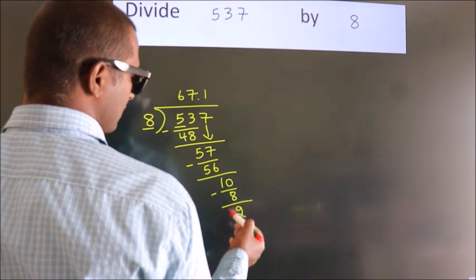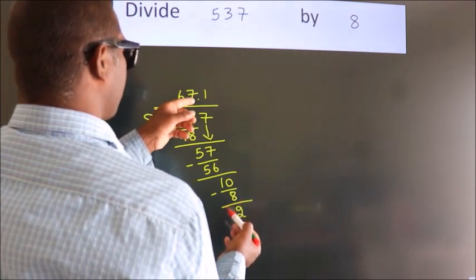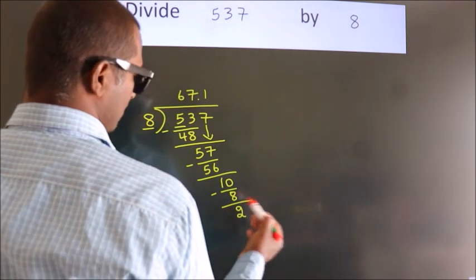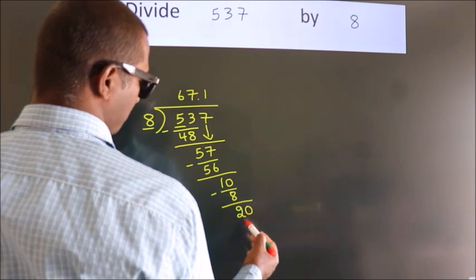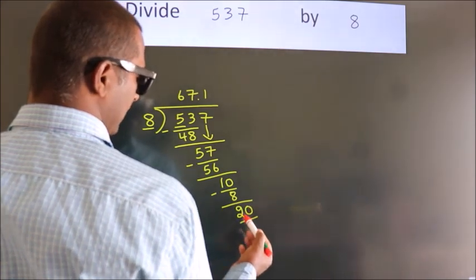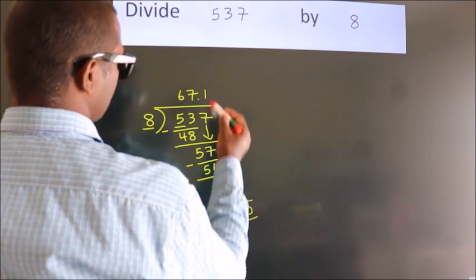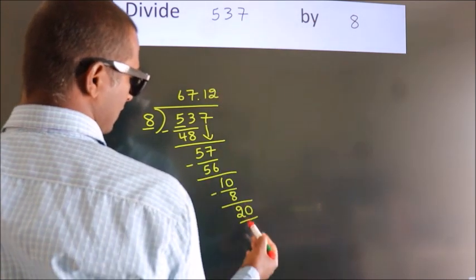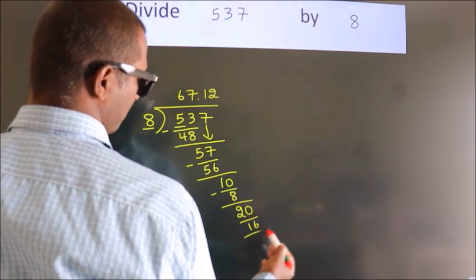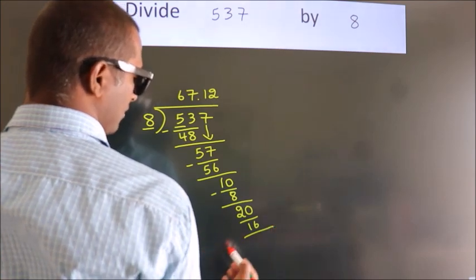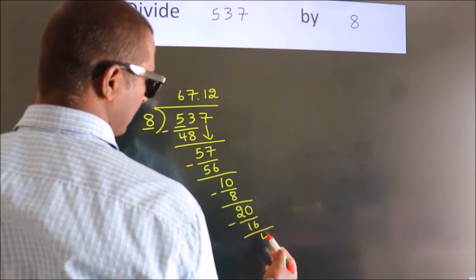After this, we already have the decimal, so directly take 0. So, 20. A number close to 20 in the 8 table is 8 times 2 equals 16. Now we subtract. We get 4.